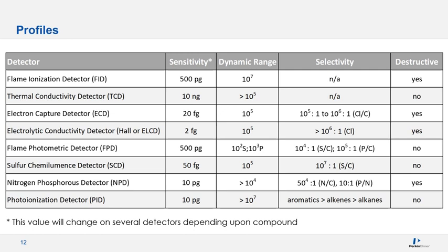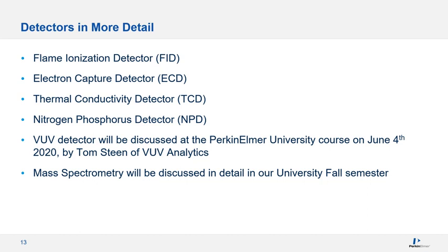In this session, I am going to focus on four common GC detectors: the flame ionization detector, the electron capture detector, the thermal conductivity detector, and the nitrogen phosphorus detector. We will have a separate talk about the VUV detector at Perkin Elmer University on June 4th, and I also invite you to attend the mass spectrometry course in the fall semester.